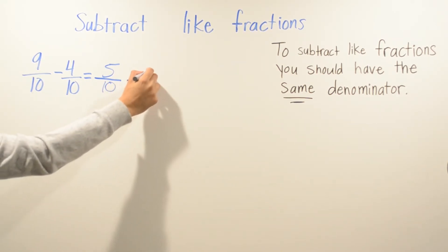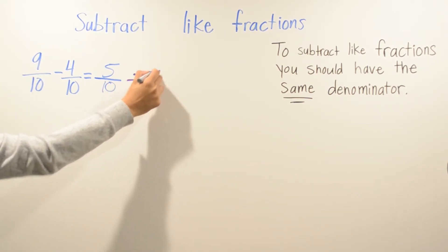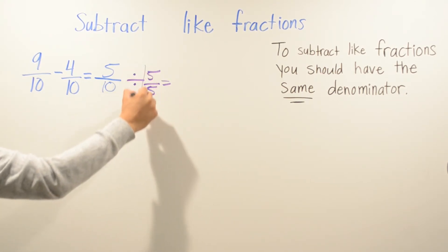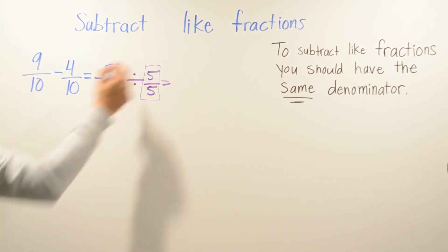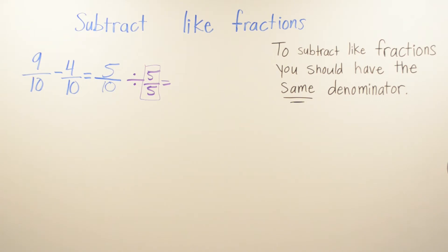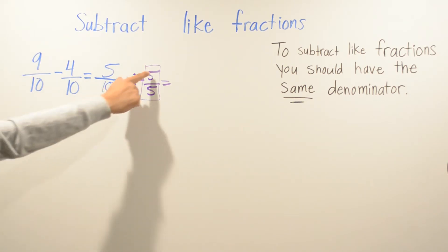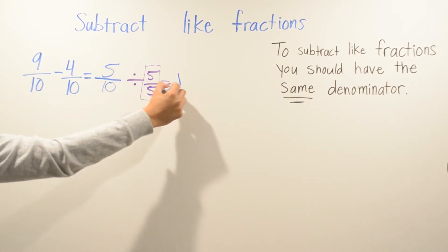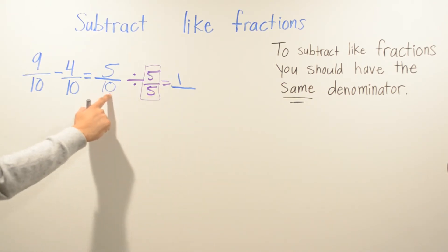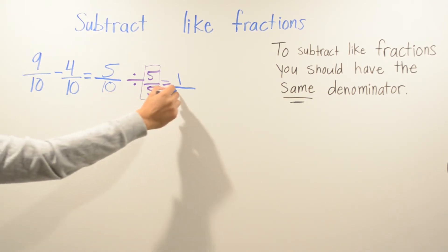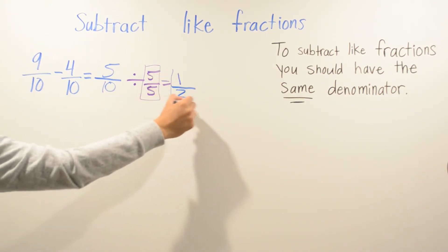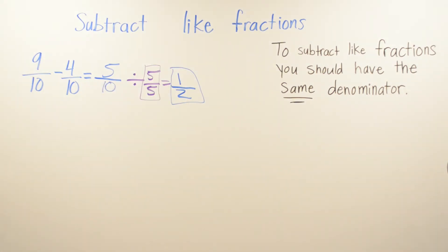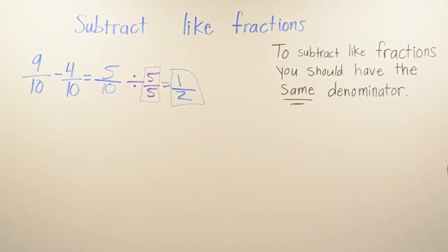5 goes into both, so we simplify by 5. 5 goes into 5 one time, and 5 goes into 10 two times. So your answer is 1 over 2.